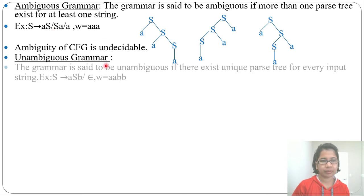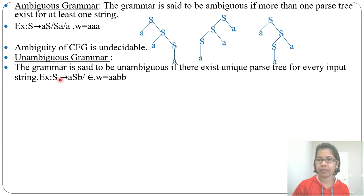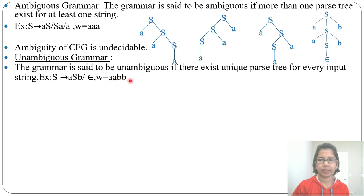Next is unambiguous grammar. The grammar is said to be unambiguous if there exists a unique parse tree for every input string. Let's take an example: S tends to aSb or epsilon, and w equals 2a, 2b. The parse tree will look like this — from S you can derive aSb, then again from this S you can derive aSb, and from S you can derive epsilon. So this is just one parse tree for aabb. You can take any string and there will be just one parse tree, so this grammar is unambiguous.